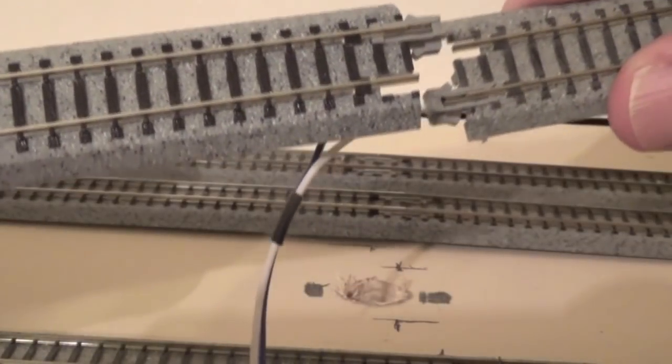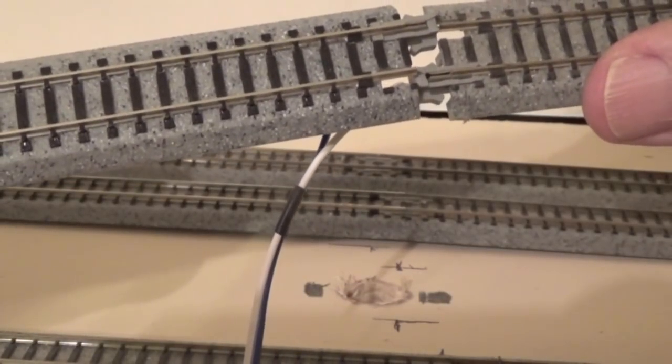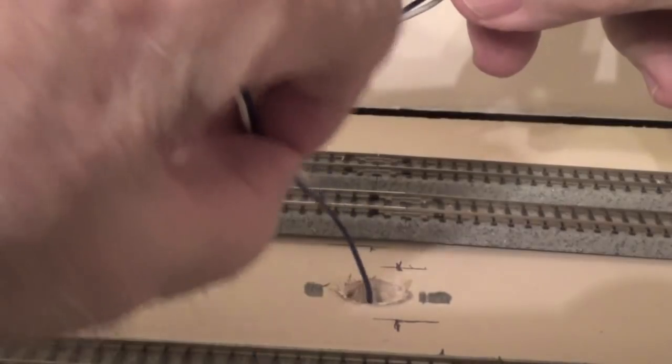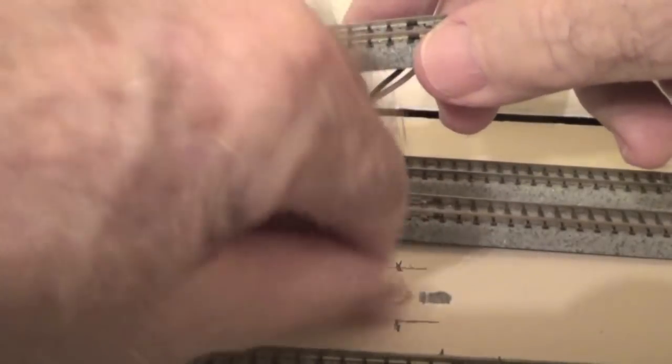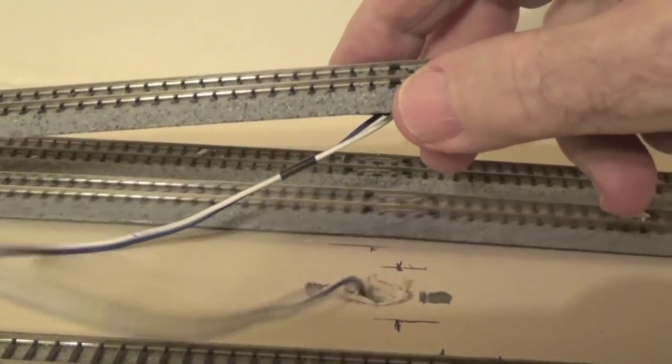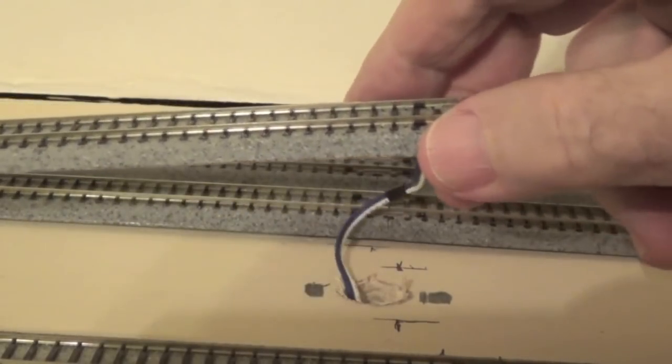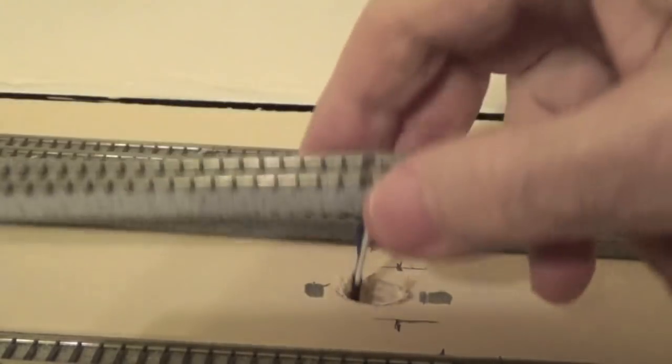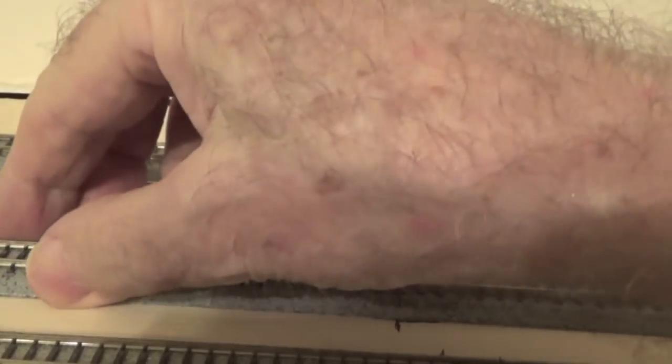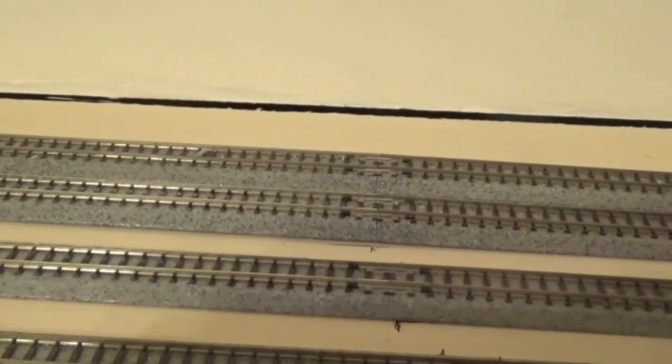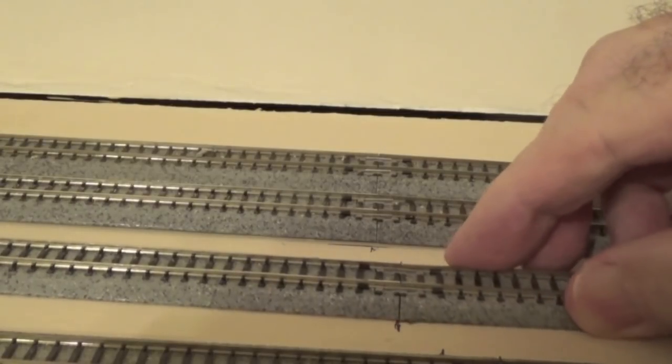Now I snap the track together. Then I drop the feeders down through the hole I drilled earlier and pull it snugly under the layout. You can now see how drilling a larger hole allows me to easily wiggle the track around and get it into the position I want it to be.